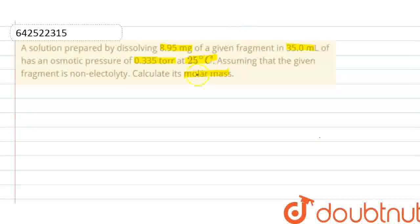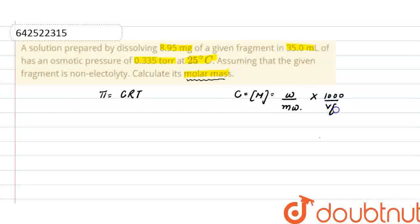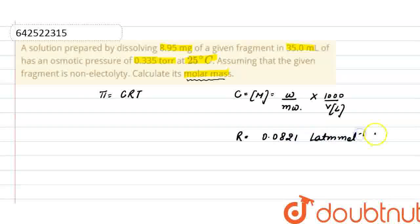So in this question we have to find out the molar mass. As we know, the formula of osmotic pressure is π = CRT, where π is osmotic pressure, C is molarity. Molarity is weight of solute divided by molecular weight, multiplied by 1000 divided by volume in liters. R is the gas constant, where the value is 0.0821 litre-atm per mole per Kelvin, and temperature is in Kelvin.